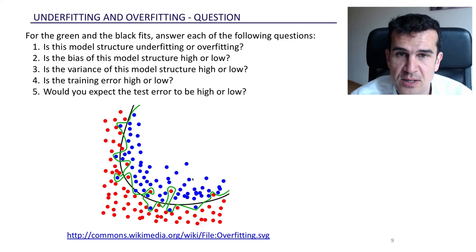Is the variance of this model structure high or low? Well, since it's very flexible, one good thing that if we take another training set, this line, this decision boundary, will change a lot. And that means that it has a lot of variance. It's going to change a lot when we fit this model with another training set.